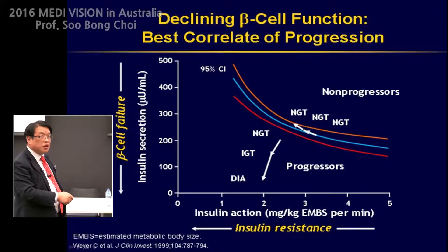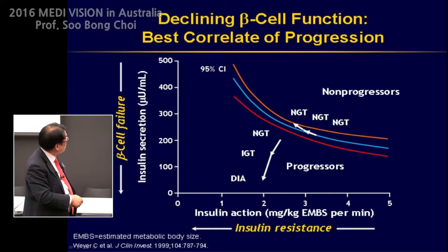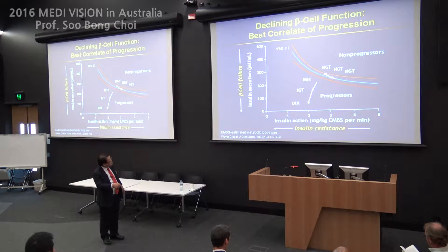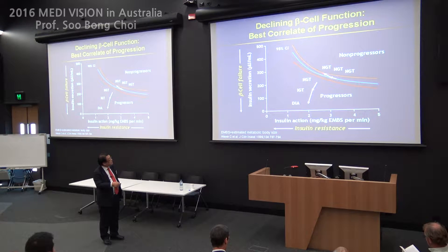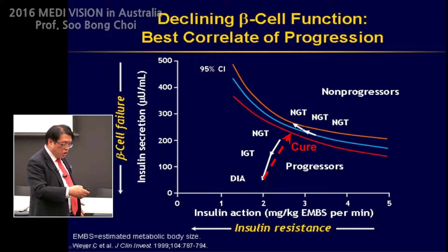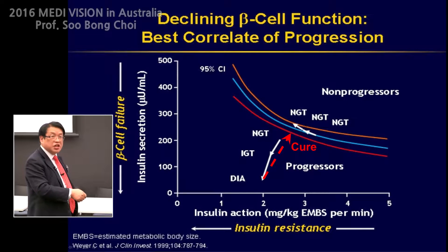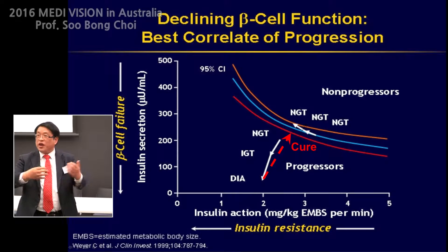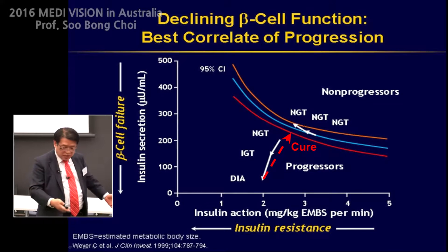In diabetes mellitus, physiologically, the relationship is in normal glucose tolerance. When the patient is under stress, insulin actually decreases, so beta cell insulin increases, and vice versa. But in diabetes mellitus, when insulin resistance develops, insulin circulation should increase but it does not — that is diabetes. When we restore this state to normal, it is well compensated. How can we do that?